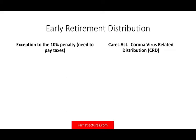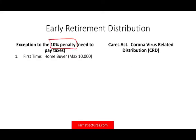The first topic is early retirement distribution. Under prior law, if you took any early withdrawal from your retirement account, you'd be subject to a 10% penalty plus taxes. There were exceptions, but those exceptions only waived the penalty — you still had to pay taxes. For example, as a first-time home buyer you could take up to $10,000 from your 401k or IRA. I did this when I bought my home; I paid taxes but not the 10% penalty.